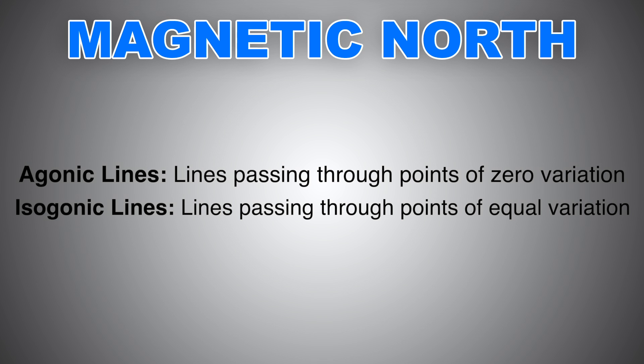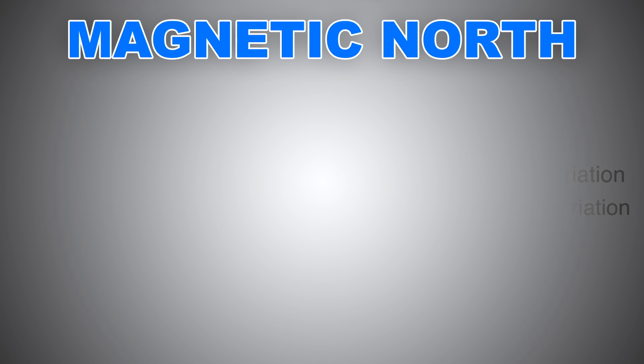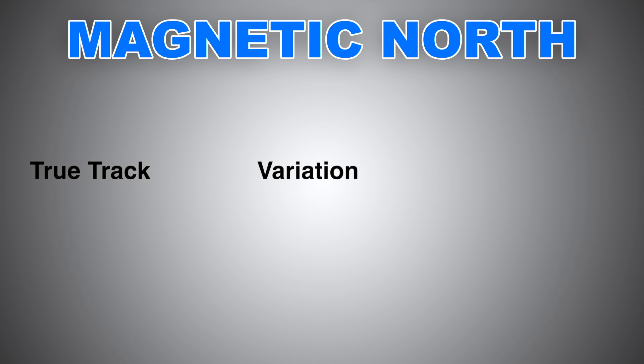For navigation, if you have a true track and would like to fly a magnetic track, you need to apply variation or magnetic declination. Here is how to do it: we have the true track on the left, variation in the middle — keep in mind 'east is least, west is best' — and then you obtain the magnetic track on the right.